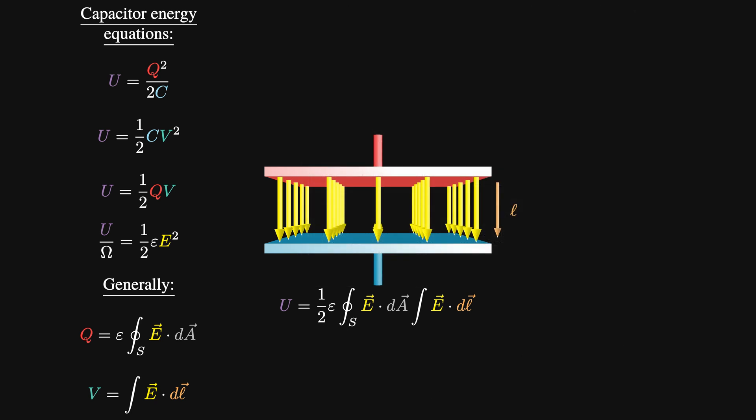Either way, going through all that, you'll still get the total energy in an electric field to be a half times epsilon times the volume integral of E squared, no matter what.